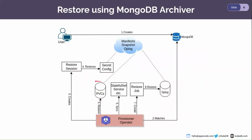Then we restore the PVCs from the volume snapshot. After the PVCs are created, we sync the stateful set and services so that the database can come up. When the database is brought up, all the PVCs are reused by the stateful set pods and the pod is in running state. The database can now accept connections, but it is not fully restored yet because we haven't restored the oplog. The operator then creates a restore job that restores the oplog from the cloud, and the restore is completed.